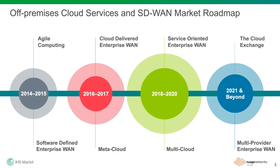As the metacloud gives way and becomes a multi-cloud — effectively a managed version of the metacloud with managed connectivity with SLA — we are able to manage and account for all workloads, whether in the enterprise data center or a cloud service provider's data center. We can also layer services on top automatically, getting to the service-oriented enterprise WAN. That's the phase we're going to start working on as we transition into 2018, and our survey results certainly show that.